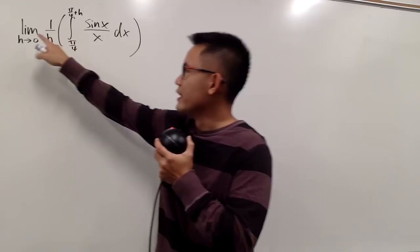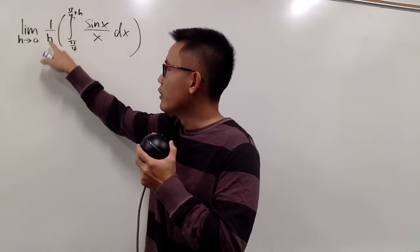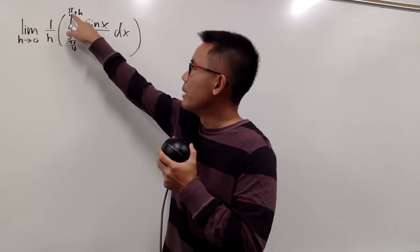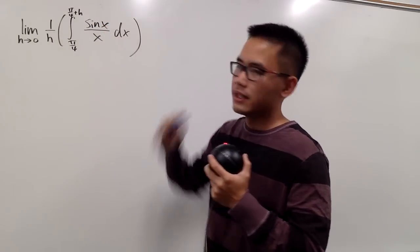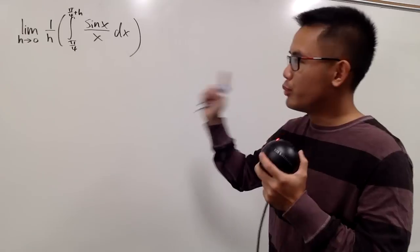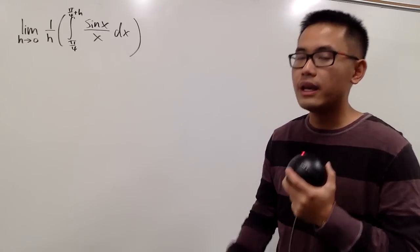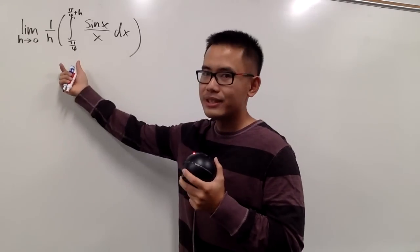Let's take a look at the limit as h goes to 0, 1 over h, times the integral from π/4 to π/4 plus h, and then here we have sin(x)/x, and of course dx. It looks pretty crazy, but we can still approach this the usual way, namely inside-out.